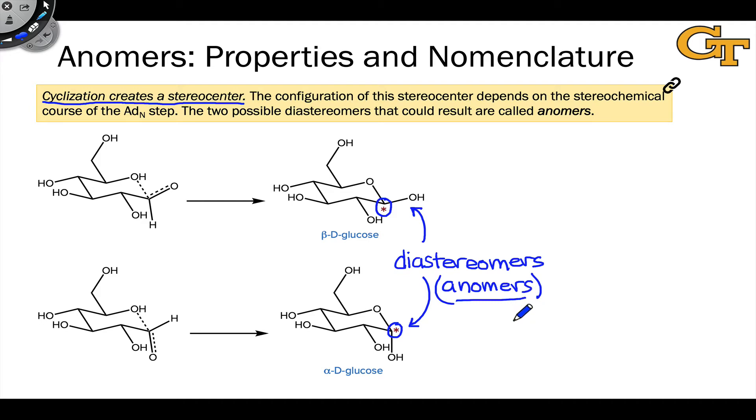Like all diastereomers, anomers have different physical properties, and we would expect these to form in unequal amounts. If we started with 100% open-chain D-glucose, we would expect more of either the alpha or beta anomer. In fact, it's not too difficult to predict which of the two anomers will be favored at equilibrium.